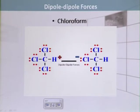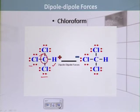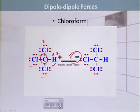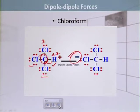Now the example of chloroform — dipole-dipole forces also exist in chloroform. In chloroform's structure, there are three chlorine atoms and one hydrogen atom bonded to one carbon atom. Chlorine's electronegativity is 3, hydrogen's is 2.2. Chlorine is more electronegative, so it attracts the shared pair of electrons toward itself, acquiring partial negative charge. Hydrogen acquires partial positive charge, and this partial positive charge of hydrogen attracts the partial negative charge on the chlorine atom of another chloroform molecule.